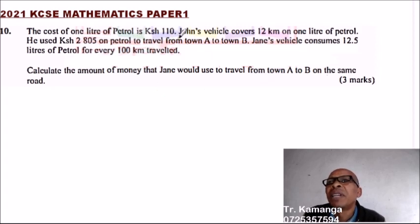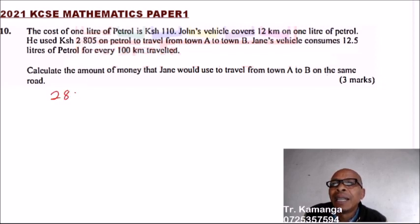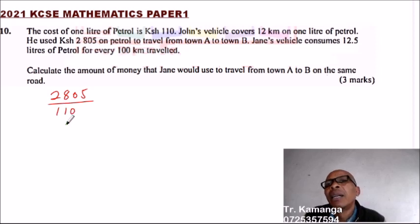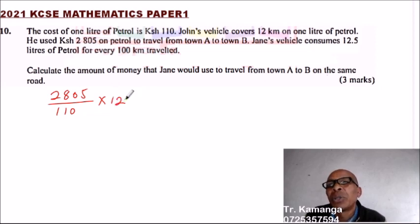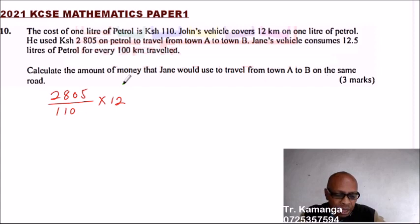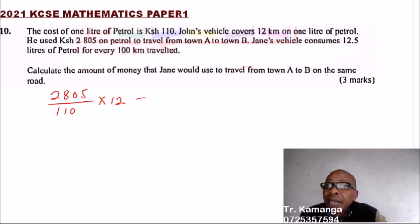The first thing to do is find the number of kilometers from A to B. Since the cost of petrol is 110 KES per liter and John covers 12 kilometers per liter, and he spent 2805 KES, you divide 2805 by 110 — that gives you 25.5 liters — then multiply by 12. Using your calculator: 2805 divided by 110 gives 25.5, multiplied by 12 gives 306.